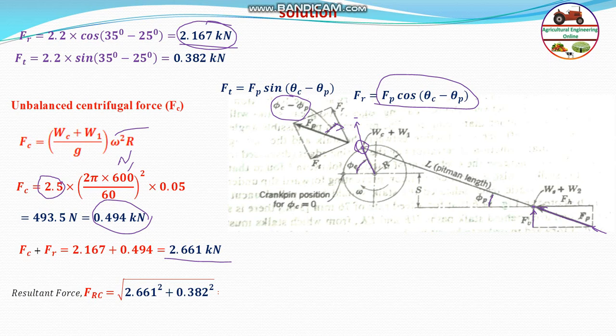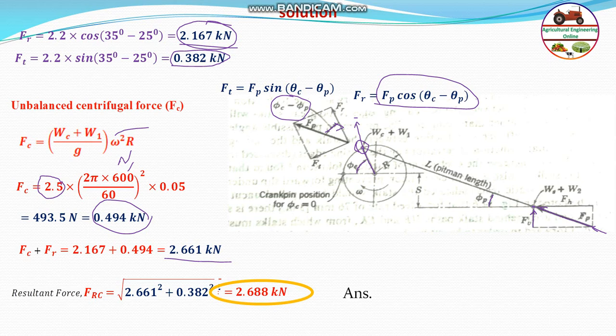The resultant force at the crank pin, F_rc, combines the total radial force and the tangential force. F_rc = √(2.661² + 0.382²) = 2.688 kN, which is approximately 2.68 kN. This matches the given option in the question. Therefore, the answer is 2.688 kN, and the problem is solved.